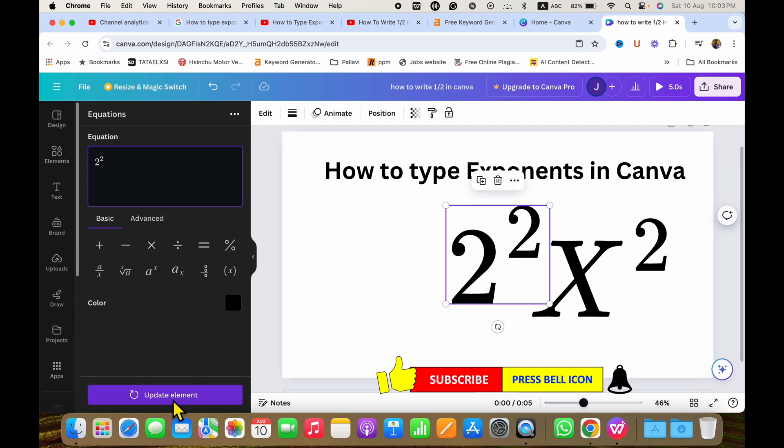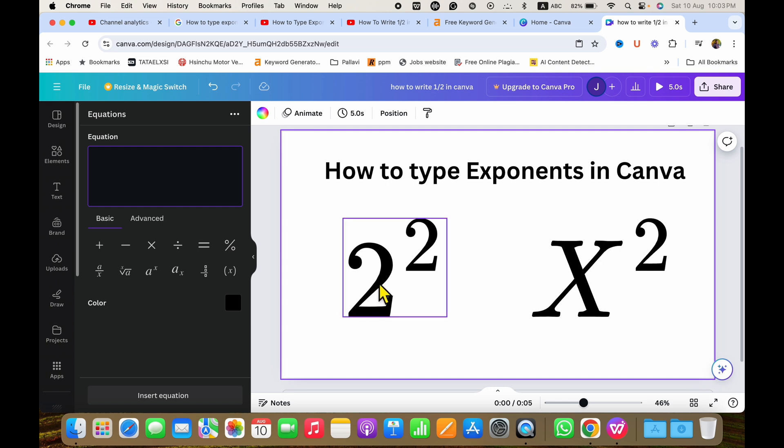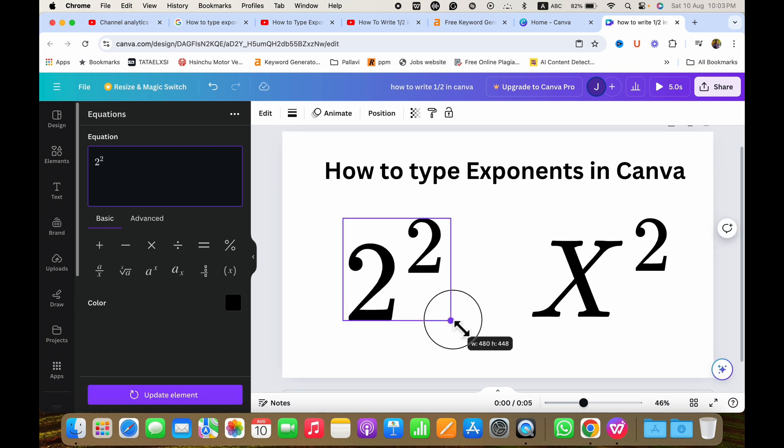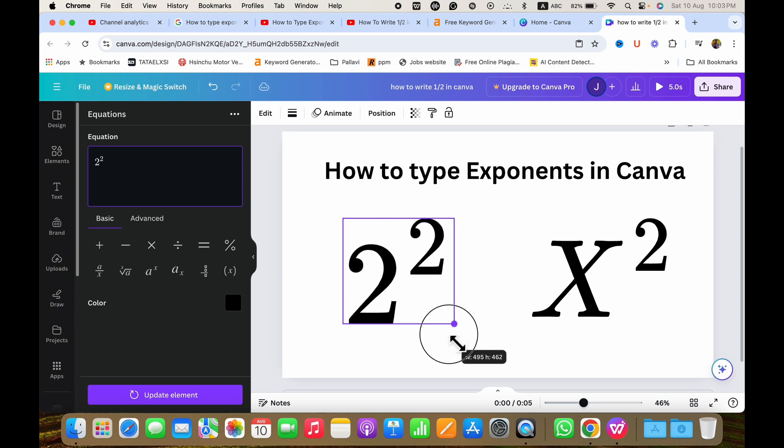So after clicking on it, you will see a text box with the exponent. Now you can click on the text box and then you can also drag it like this to change the size of the text.